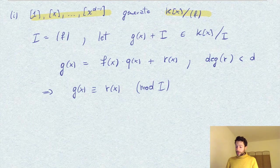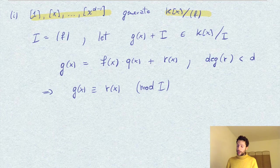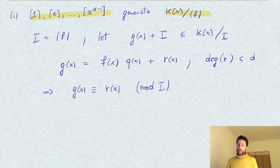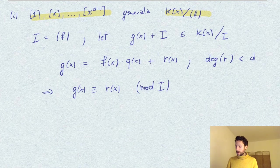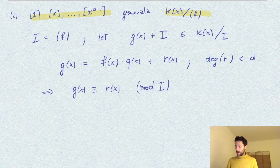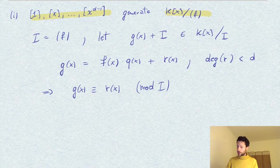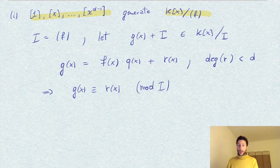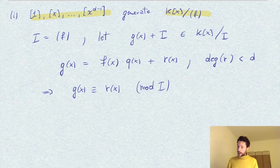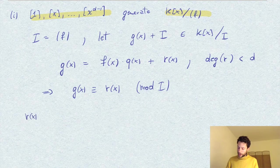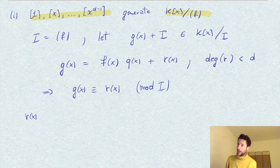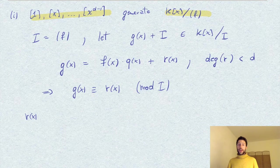We want to prove that g is generated by these elements. Of course, if r is 0, then g is 0 in the quotient, and it's not hard to generate 0—you take all coefficients equal to 0. But in any case, r(x) can be written as a linear combination of these monomials.